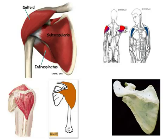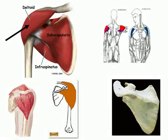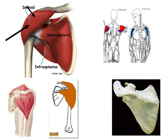The deltoid is a large thick triangular muscle which covers the shoulder joint in front, behind and laterally.